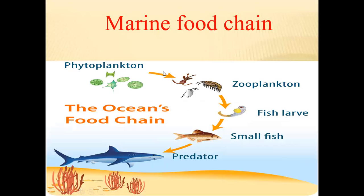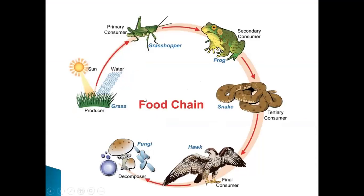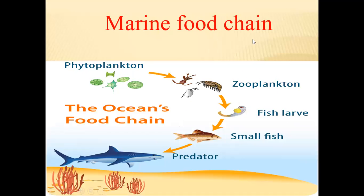There is also another kind of food chain. The one before this is a land food chain, but this one is a marine food chain, which means you can find it in oceans and seas. It also starts with producers, which are phytoplankton. They can make their own food because they contain chloroplasts, so they can absorb sunlight and make their own food by photosynthesis.